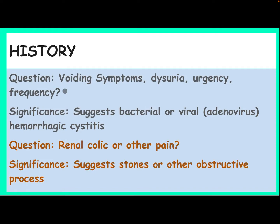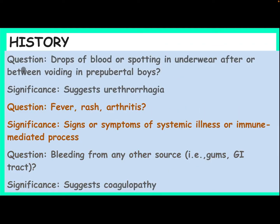Ask about voiding symptoms — dysuria, urgency, frequency — which may suggest bacterial or viral (adenovirus) hemorrhagic cystitis. Ask about renal colic or other pain, which is significant as it suggests a stone or other obstructive process. Ask about drops of blood or spotting in underwear after or between voiding in pubertal boys, which is significant and suggests urethragia.